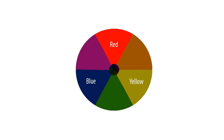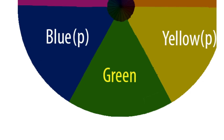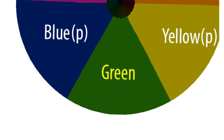Looking at our color wheel here, we have the primary colors of red, blue, and yellow. So when you mix them together, you get the secondary colors. Red and blue gives you purple, blue and yellow gives you green, and red and yellow give you orange.